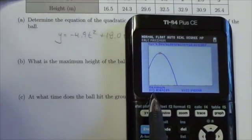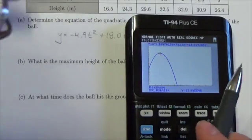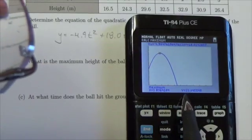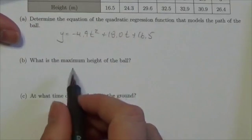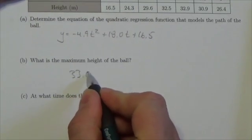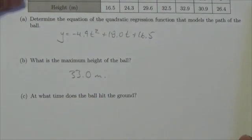And I get that we get maximum at 1.8 seconds. And my maximum is 33.0 when I round that. So what's the maximum height? 33.0 meters.